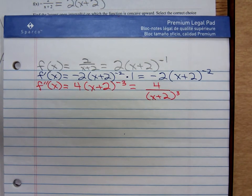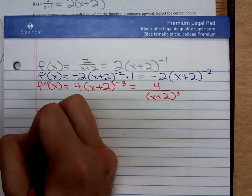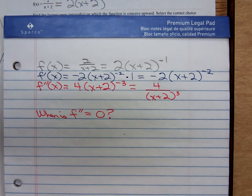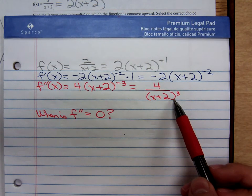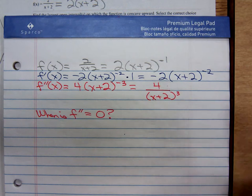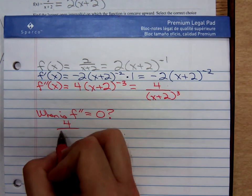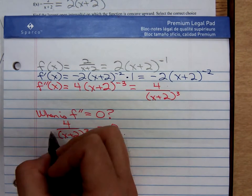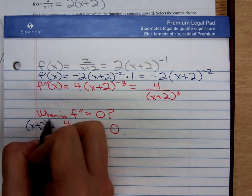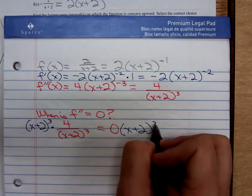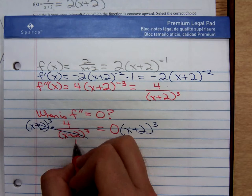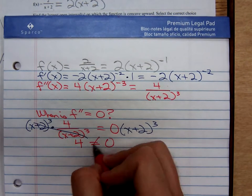We have to ask ourselves, when is f double prime equal to 0? When is f double prime undefined? Well, a fraction is equal to 0 when its numerator is 0. So will that numerator ever be 0? If you took that fraction and tried to set it equal to 0, first thing you'd want to do is multiply both sides by that denominator. So the only way that second derivative is equal to 0 is if 4 is equal to 0. And that never happens.